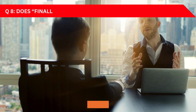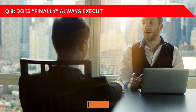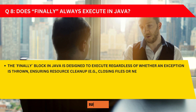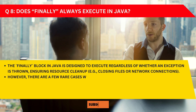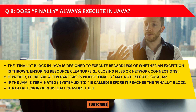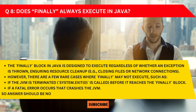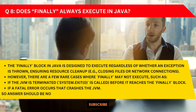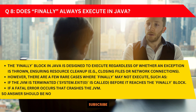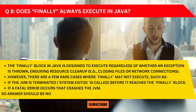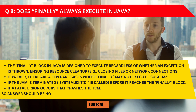Question eight: Does the finally block always execute in Java? The finally block is designed to execute regardless of whether an exception is thrown, ensuring resource cleanup such as closing files or network connections. However, there are rare cases where finally may not execute — for example, if the JVM is terminated (e.g., System.exit() is called before reaching the finally block), or if a fatal error occurs that crashes the JVM. So the answer is: not always.